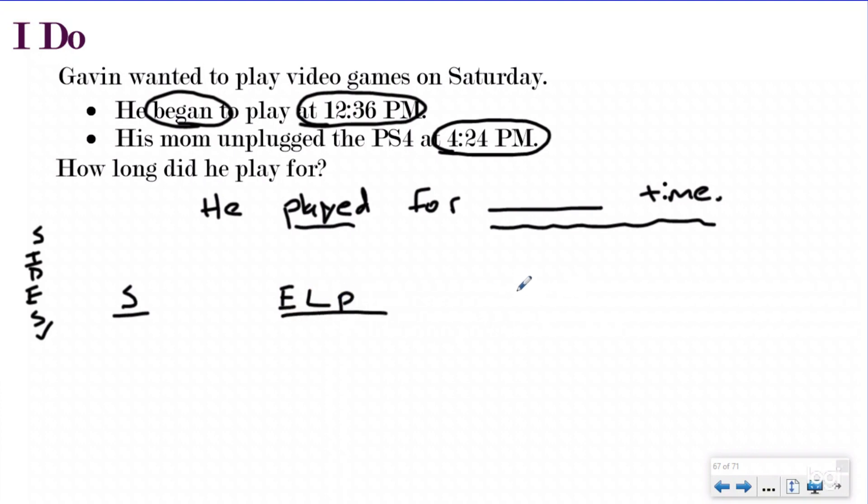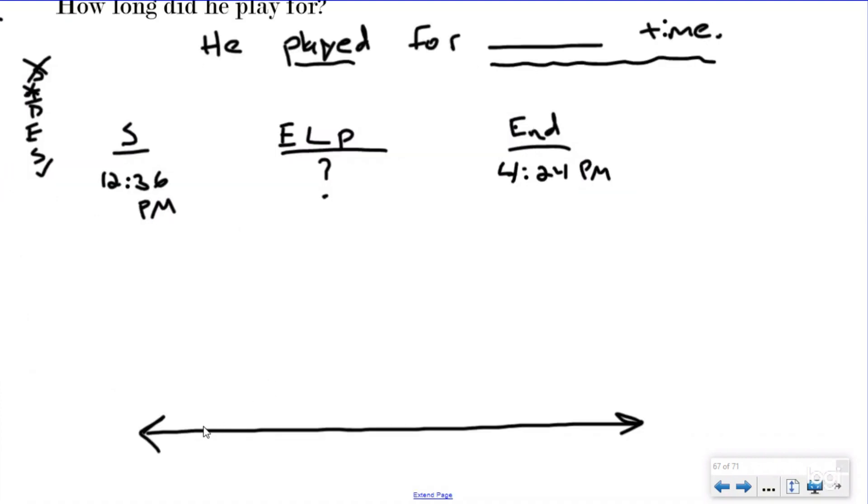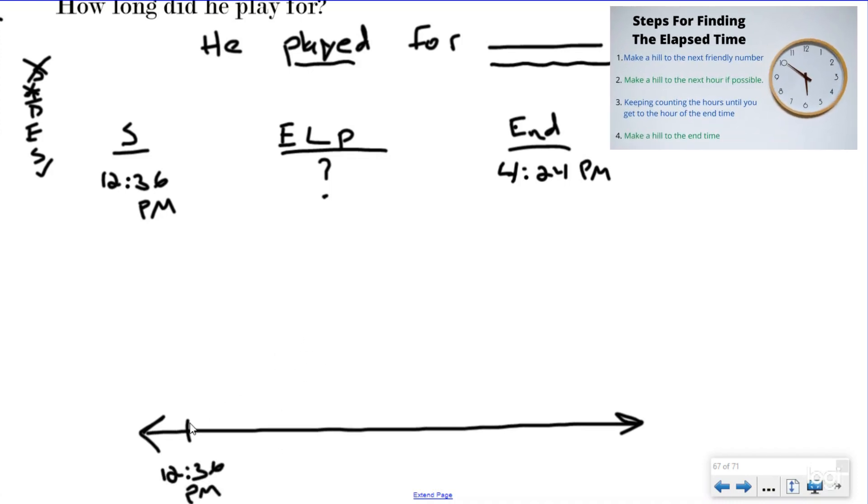I know that they gave me my start time and my end time. And so this is an elapsed time problem. So we develop our plan by drawing our start time, elapsed time, and end time. We're going to plug in 12:36 p.m. for our start time because that's when he began to play. And then his luck ran out at 4:24 p.m. I'm looking for the elapsed time. So I know here that we love our mountains and hills strategy. So I'm going to go ahead and draw my timeline. And I'm going to label my start time here, 12:36 p.m.